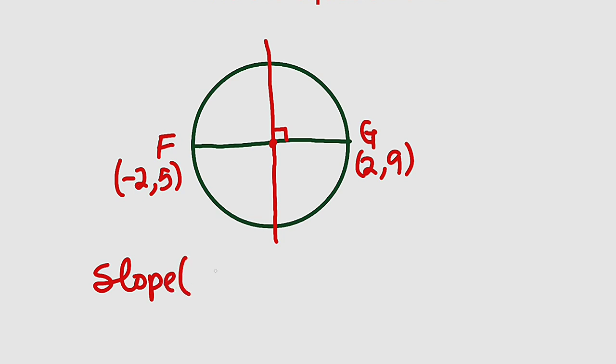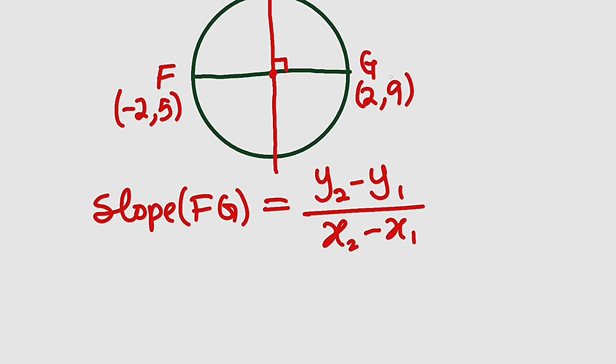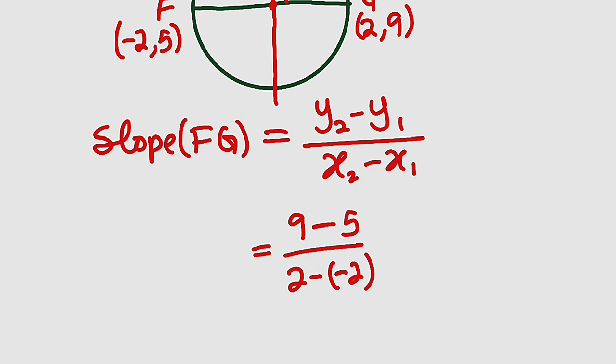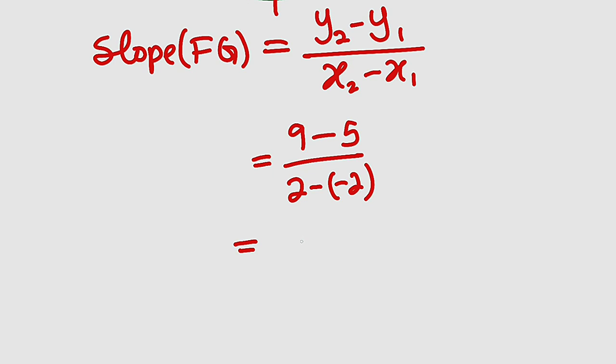So slope of FG, which is equal to (y2 - y1) divided by (x2 - x1). Let's assume 9 here is our y2. So we have 9 minus 5, divide by x2, which is 2 right here, minus (-2). So we have 2 minus (-2). If you simplify this, you are going to obtain the gradient of the line FG. So this is equal to 9 minus 5 is 4. 2 minus (-2) is 2 plus 2, which is equal to 4. Simplify this, you are going to obtain 1. And hence the slope of the line FG is 1.